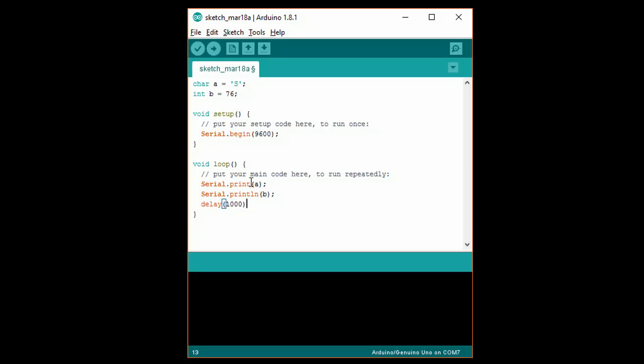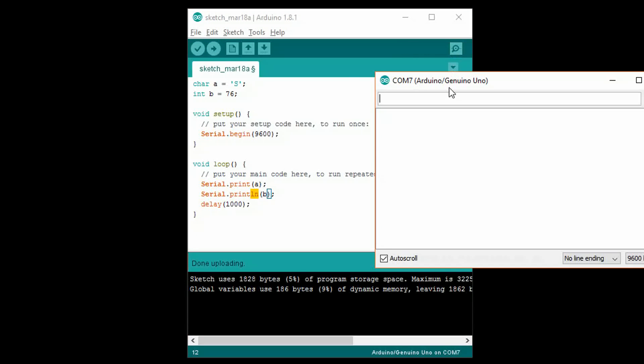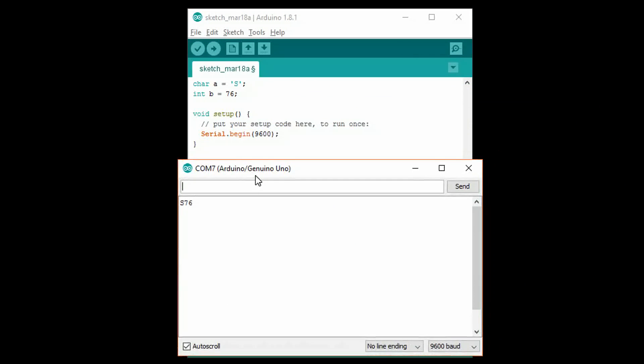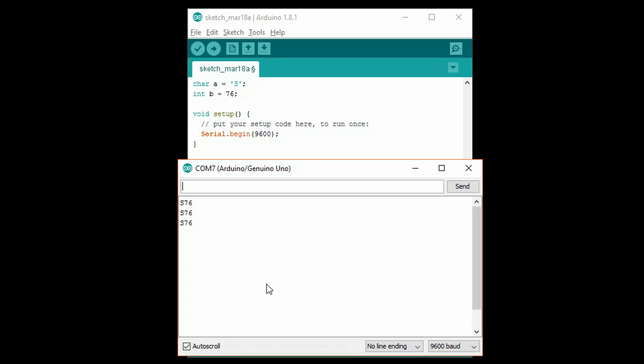Serial.printA prints the value of A in our serial monitor, and serial.println, B prints B, followed by a new line. Ln, in println, stands for line, and is similar to pressing enter or return on your keyboard after something has been printed. Upload your program, and then press the serial monitor button to open a terminal. You should see S76 being printed every second, each on a new line.